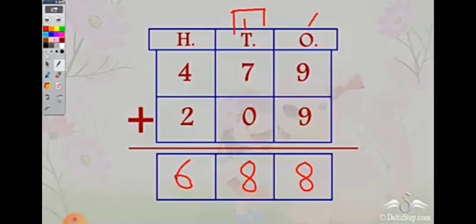One more example: 479 plus 209. Units: 9 plus 9 is 18 — we write only 8 because we write only the units digit, and the tens carry over to the next digit. In the tens place, the carry over makes one room: 7 plus 1 is 8, and since 0 means nothing, 8 comes here. Then 4 plus 2 is 6. The answer is 688.